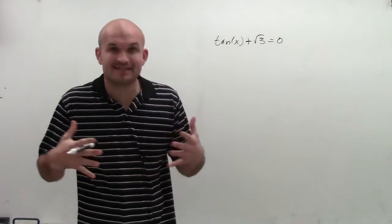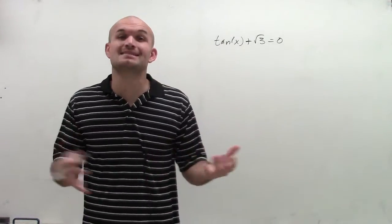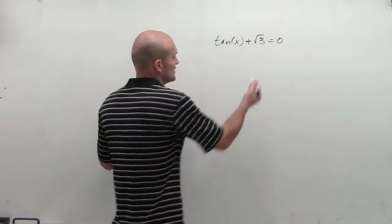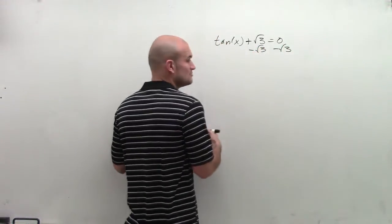So what I'm going to do for this problem is we need to solve and find the values of tan of x. We're going to have to isolate our trigonometric term. The first thing I'm going to do is subtract the square root of 3 on both sides by the subtraction property of equality.